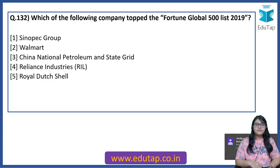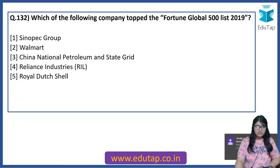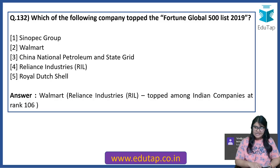Which of the following companies topped the Fortune Global 500 list 2019? The answer is Walmart. Among Indian companies, Reliance Industries Limited has topped and is placed at rank number 106. Reliance Industries Limited has displaced Indian Oil Corporation to be the top Indian firm on this list.